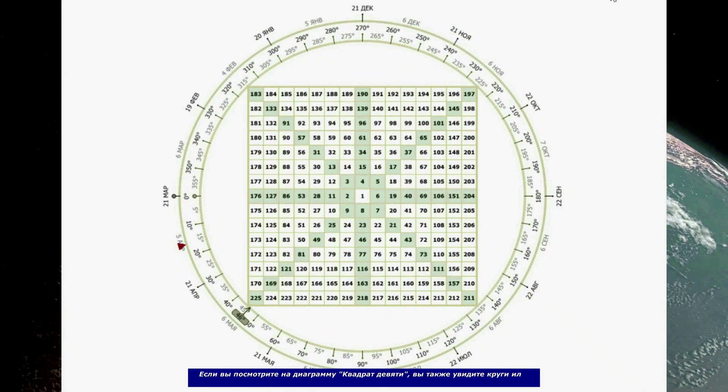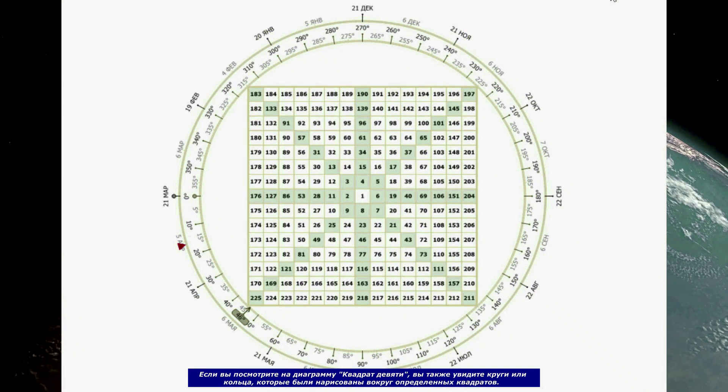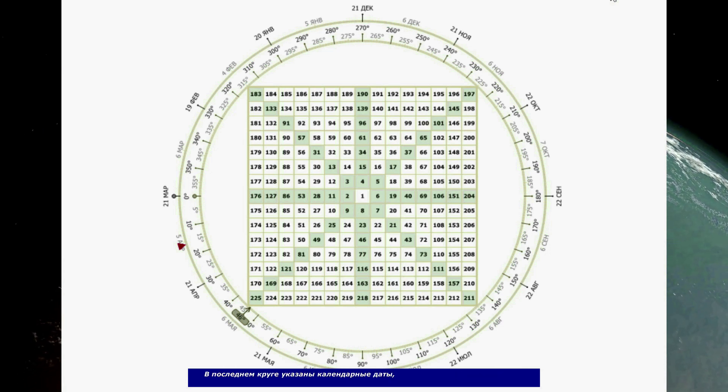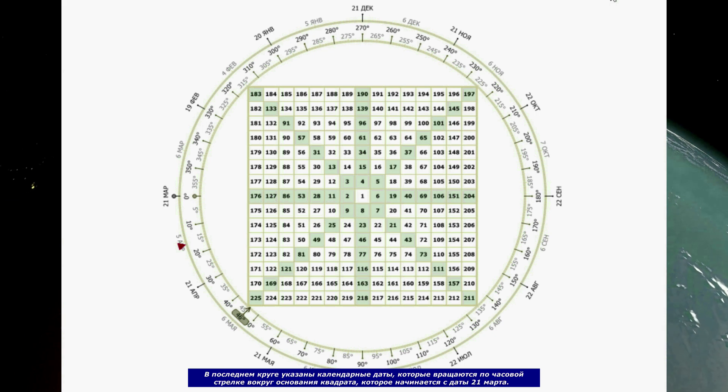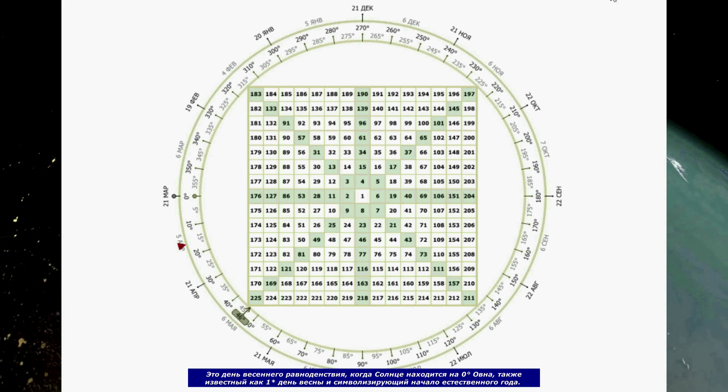If you look at the Square of 9 chart, you will also see circles or rings, which have been drawn around certain squares. The last circle has calendar dates that revolve in a clockwise fashion around the square base, which starts from the date March 21st. This is the vernal equinox, when the sun is at 0 degrees Aries, also known as the first day of spring and represents the beginning of the natural year.